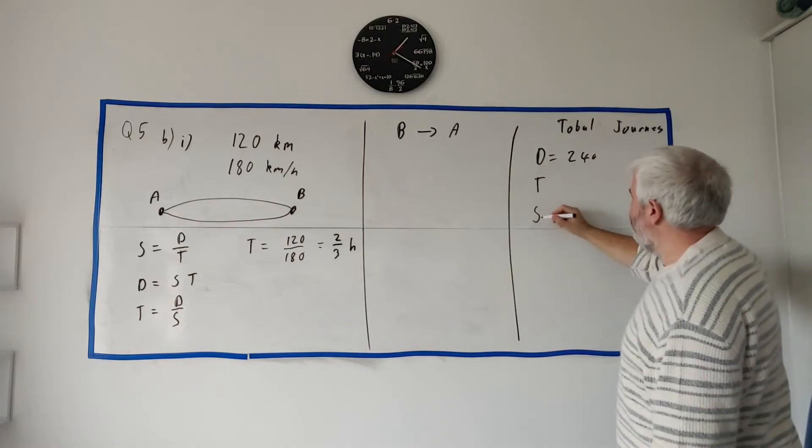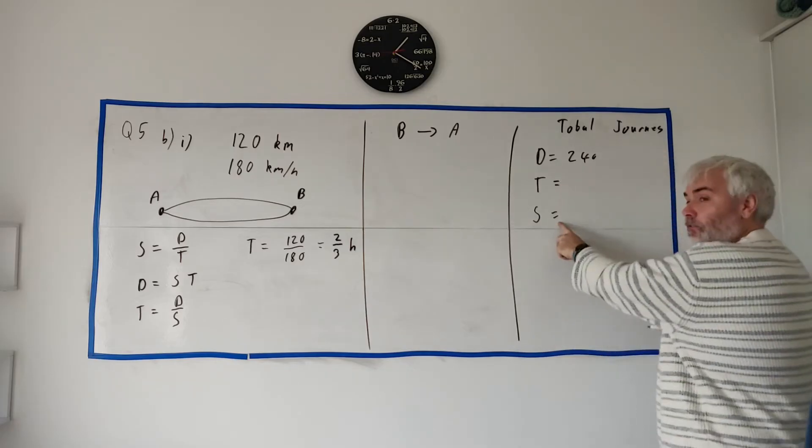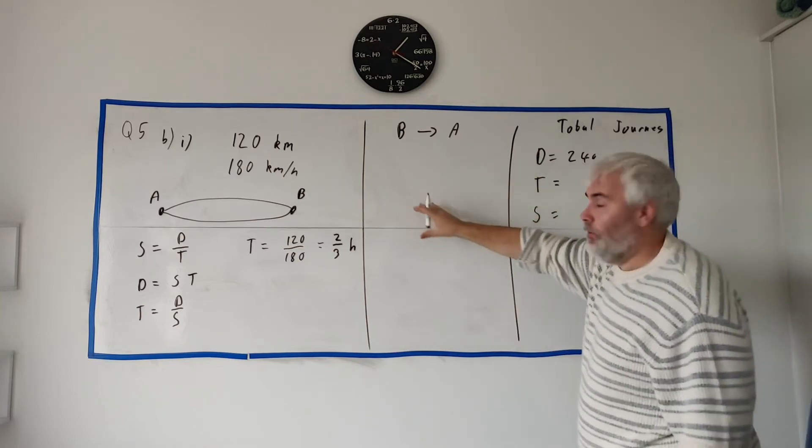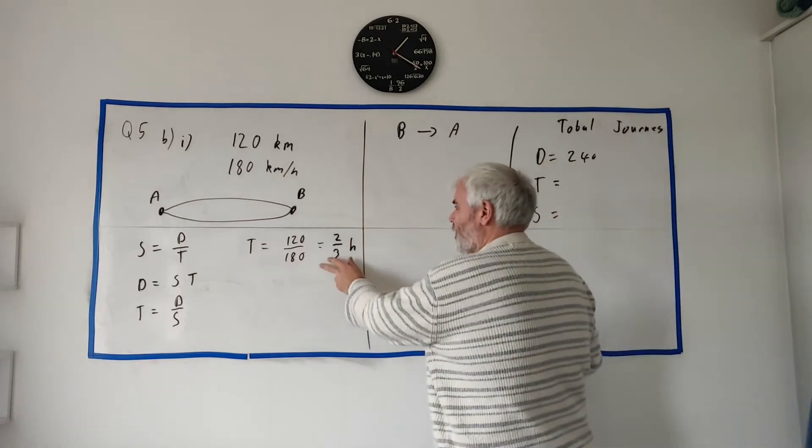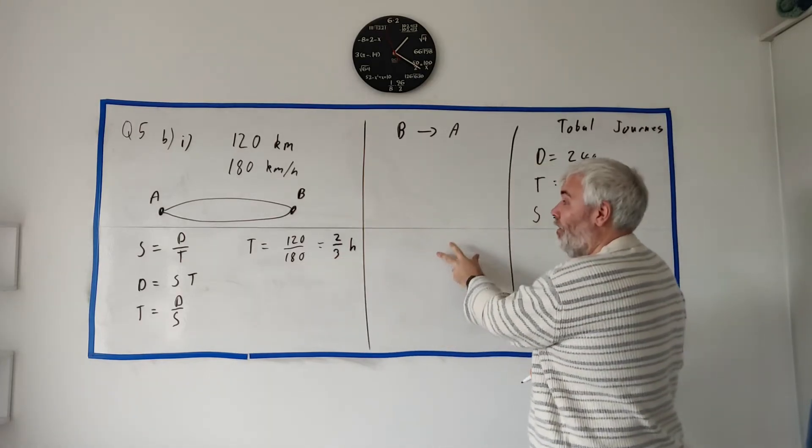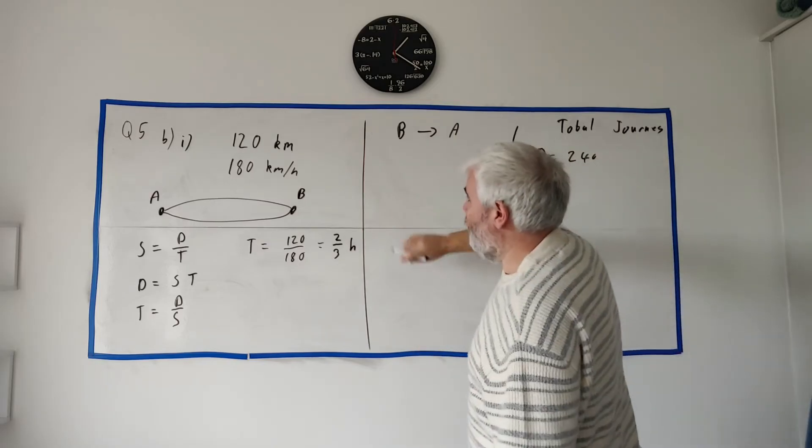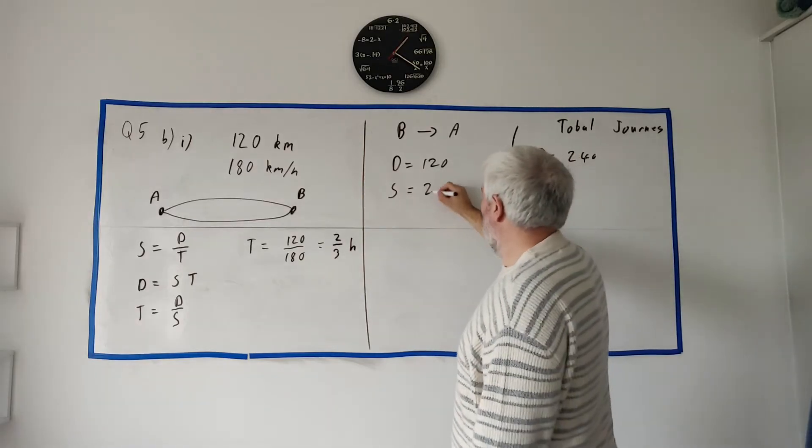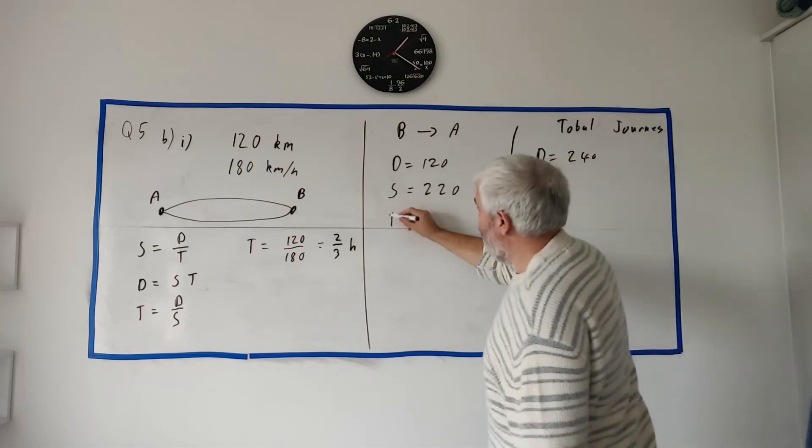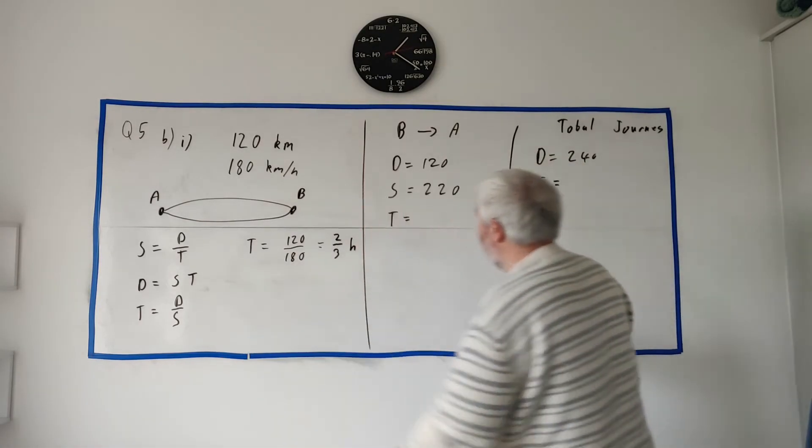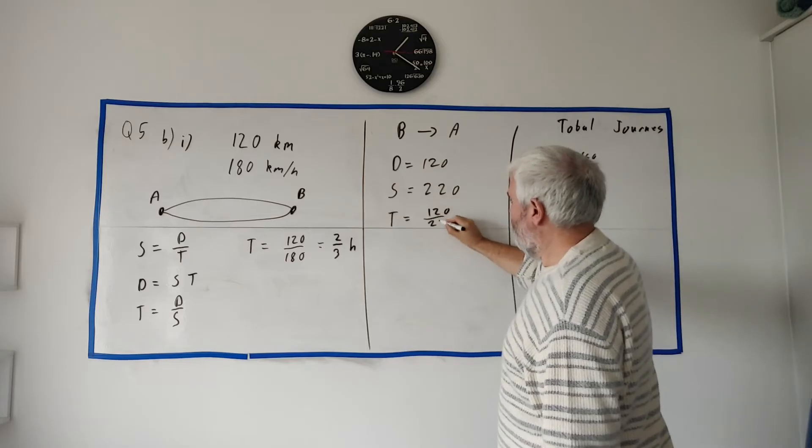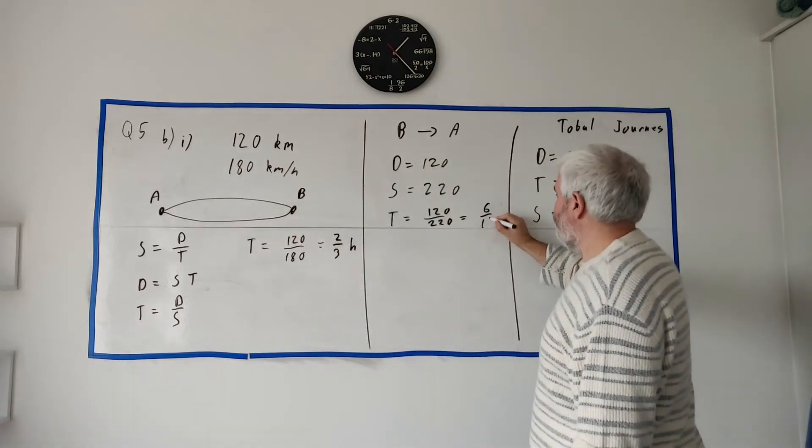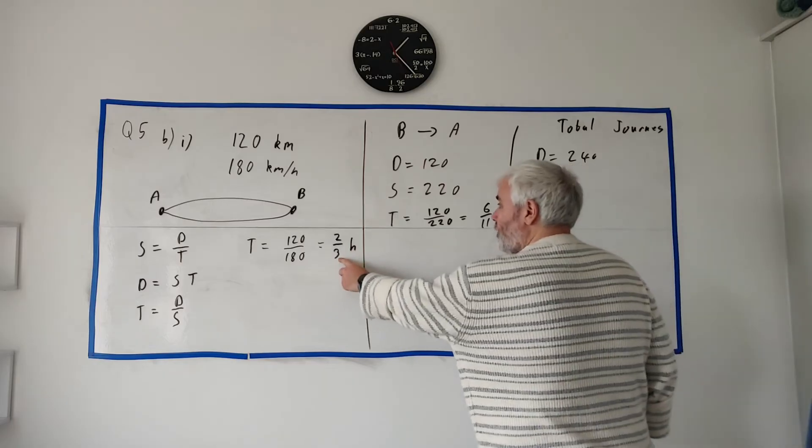I'm going to do B to A over here. The total distance would be D equals 240 - 120 to here, 120 back. Time we don't know, and speed we don't know, and that's the one they're asking us for. So distance was easy, we added the two up. But time, we know how long it took the first journey, we need to know this journey here. We know distance is 120, we know the speed is 220, so we need to know the time. T equals D over S, 120 over 220.